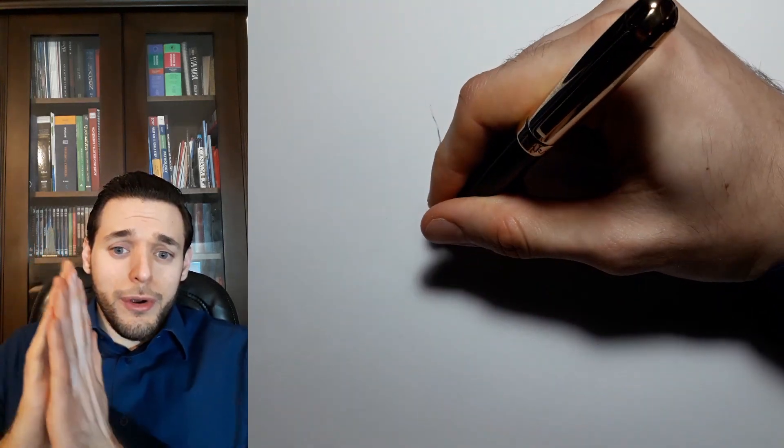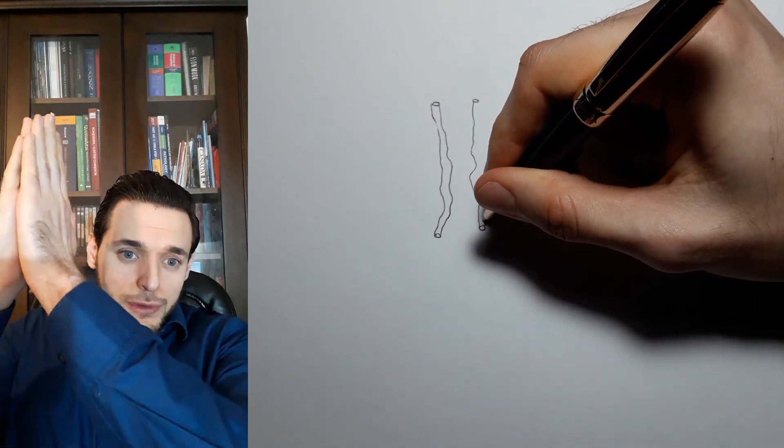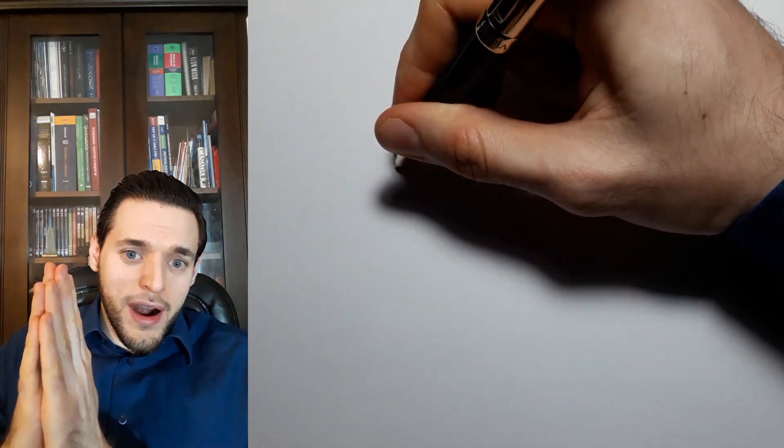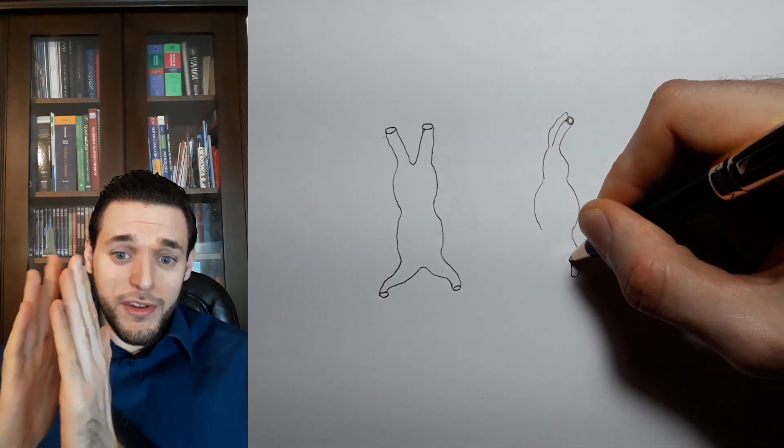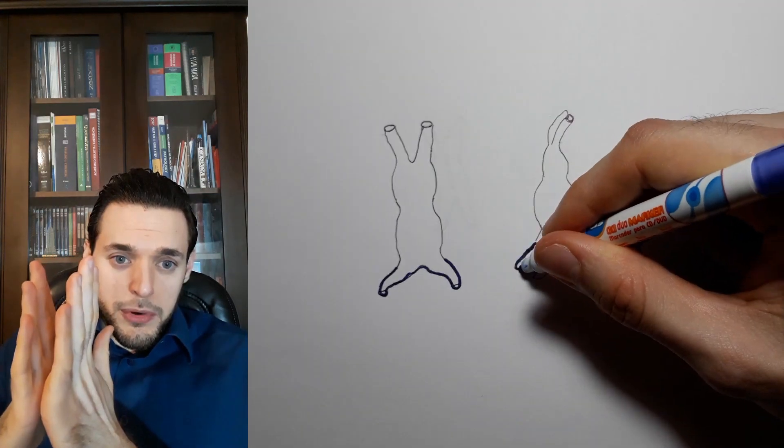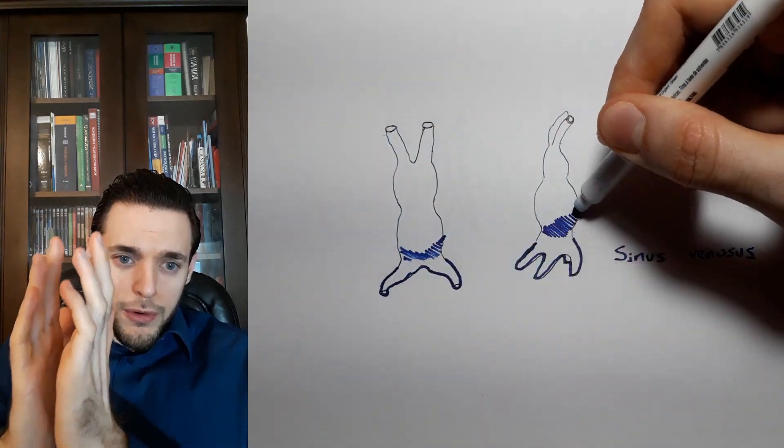In cardiac embryology, the truncus arteriosus is the outflow tract of the primitive heart with its four dilatations. We have the sinus venosus, the primitive atrium, the primitive ventricle, the bulbus cordis,